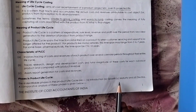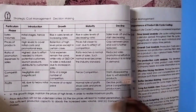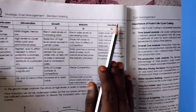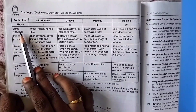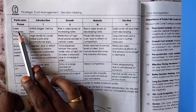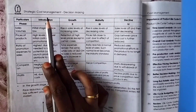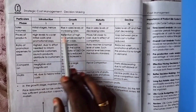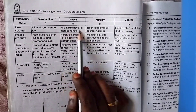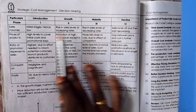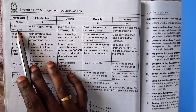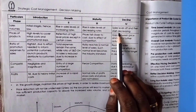There are four phases in the product life cycle: first, Introduction; second, Growth; third, Maturity; fourth, Decline. Regarding sales volume: in the Introduction stage, sales volume will be low; in the Growth stage, sales volume rises at increasing rates; in Maturity, sales volume will be at its peak; and in Decline, sales volume will start decreasing.